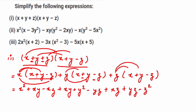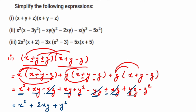Now collect like terms. x² appears once, so we keep x². For xy, we have xy plus xy, giving 2xy. For xz, we have plus xz and minus xz — they cancel. y² appears once, so plus y². For yz, minus yz and plus yz cancel. We are left with minus z². So the final answer is x² + 2xy + y² − z².